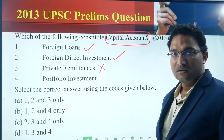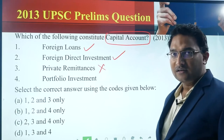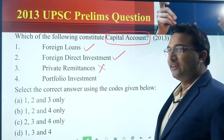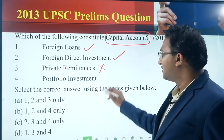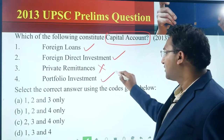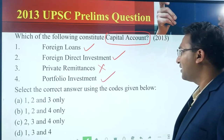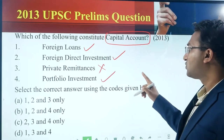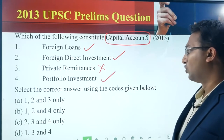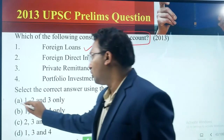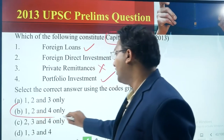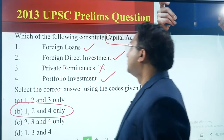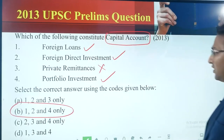Four: portfolio investment — this is part of the capital account. So one, two, and four — option B, one two and four — this is the answer.